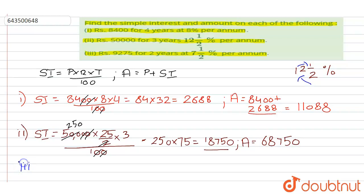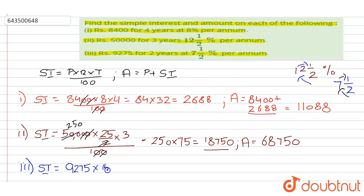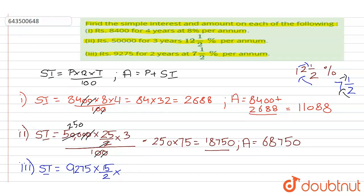Let us solve the third part, where simple interest equals principal 9275 into rate of interest seven and a half percent. Converting to an improper fraction: 7 into 2 is 14, plus 1 gives 15 by 2 percent, into time 2 years, divided by hundred.